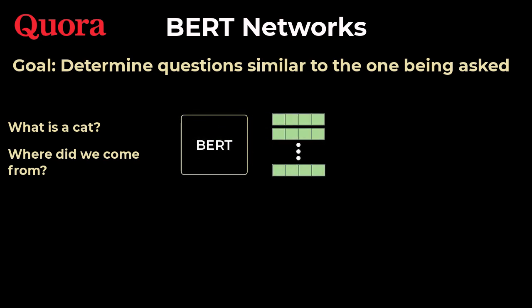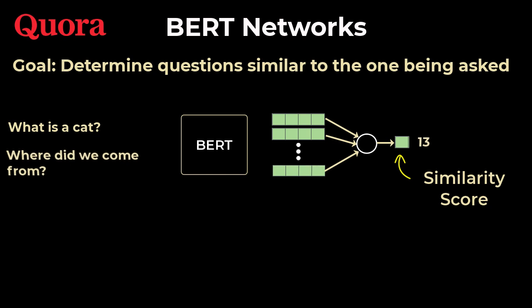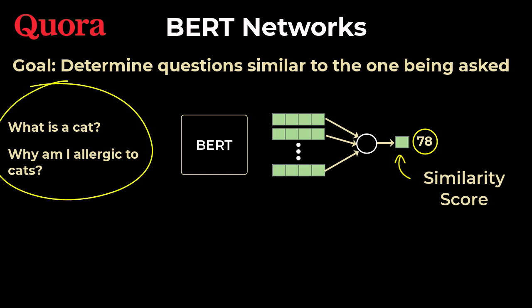BERT generates word vectors. We then pipe this into some feedforward layers such that the output would be a single neuron. And this neuron would have the notion of similarity. Higher the number, higher the similarity, essentially. And then we'd need to pass in every question on the platform in this way to determine the similarity. Then you just select the questions that have the highest similarity, and they are considered the most relevant or closest questions.